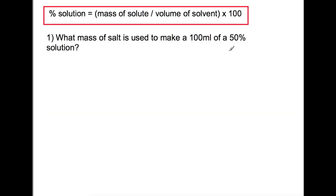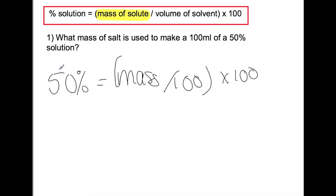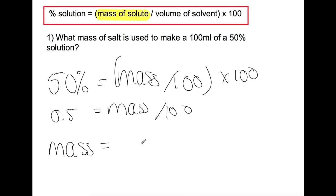In the first example, we're trying to calculate the mass of solute required, so we need to rearrange our equation. We're making a 50% solution with a volume of 100 millilitres. Rearranging by dividing both sides by 100 gives 0.5, then multiplying both sides by 100 to find the mass. The mass of salt required is 50 grams.